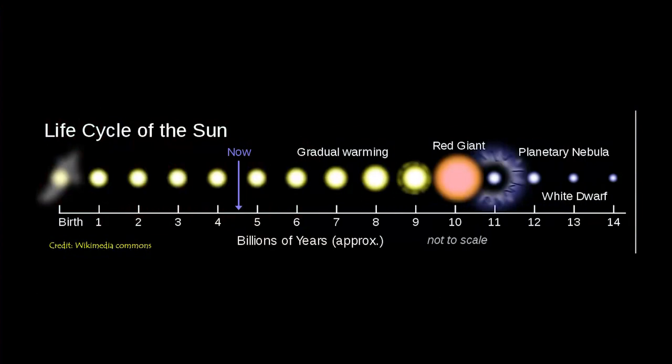Stars like our Sun won't go through such a violent phase. They'll just quietly settle down and slowly, over a period of many billion years, become cooler and cooler — they form what is called a white dwarf. They also give away the outer shell, forming what is called a planetary nebula. There are some very pretty planetary nebulas in the sky.